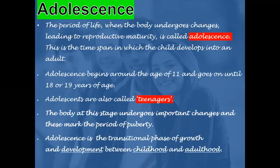Adolescence is the transitional phase of growth and development between childhood and adulthood. The changes that begin in the body during this period cause girls to grow into young women and boys to grow into young men. In girls, adolescence begins a year or two earlier than in boys.